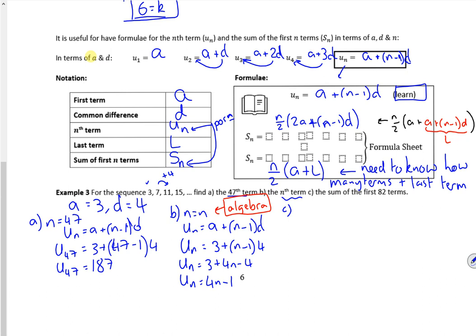Right then, the sum of the first 82 terms. If I knew what the 82nd term was, I could just use the bottom equation. But as I don't, I'll have to use this one. So the sum to n is n over 2, 2a plus n minus 1 times d.